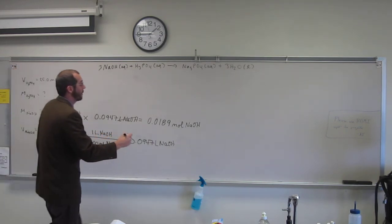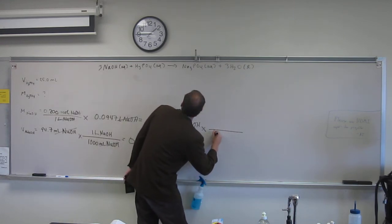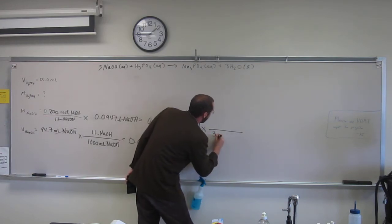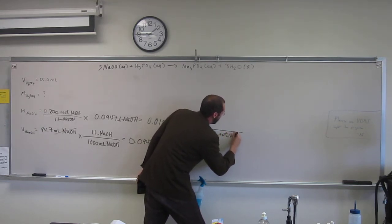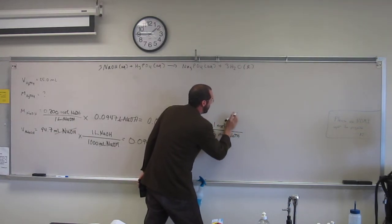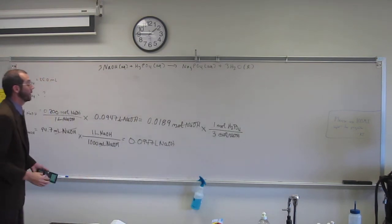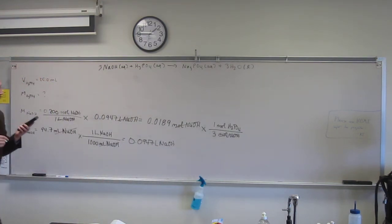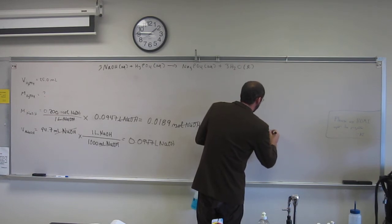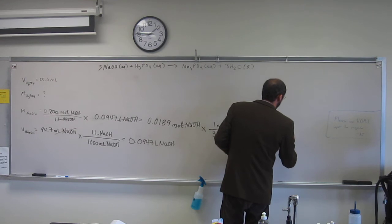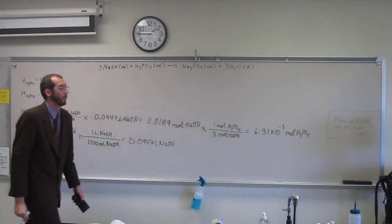So in order to find the number of moles of phosphoric acid we needed, it's 3 moles of NaOH to 1 mole phosphoric acid, so we cancel and cancel there, so divide that number by 3, and we get this number, 6.31 times 10 to the negative 3rd moles of phosphoric acid, like that.